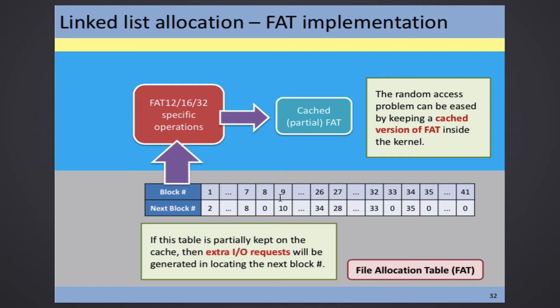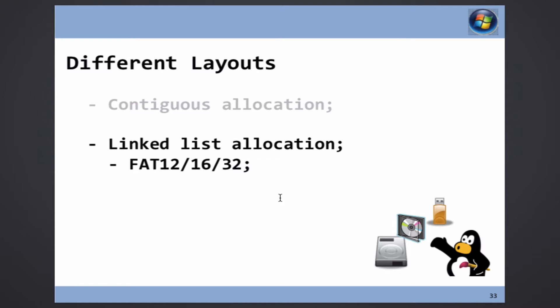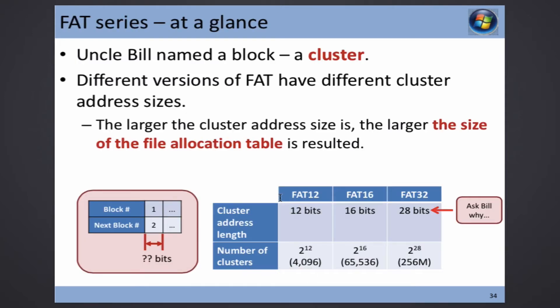Now we go to FAT 12, 16, and 32 — very interesting numbers. FAT 12 and 16 means how many bits you use to represent a block address. Uncle Bill — Microsoft — doesn't like the name 'blocks' and calls a block a 'cluster.' That's why you hear 'bad cluster,' which means bad block. FAT 32 — interestingly — doesn't mean 32 bits for the cluster address length. It actually means 28 bits.